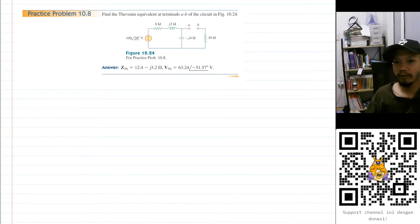Hello, my name is RD and we are going to solve Practice Problem 10.8 from Sadiq's book. Find the Thevenin equivalent at the terminals AB of the circuit of Figure 10.24.